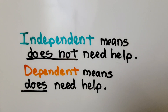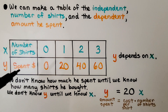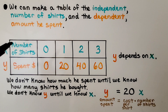Independent means does not need help — you can do it alone. Dependent means does need help. We can make a table of the independent number of shirts and the dependent amount he spent. The number of shirts will be our x value, and the amount of money spent will be the y value because it depends on the number of shirts. Y is dependent; x is independent.